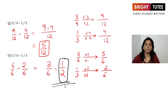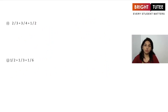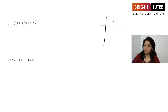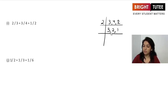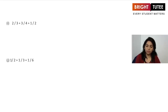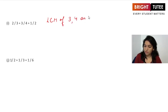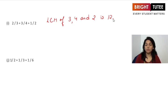Now we have a question with three terms to add. The denominators are 3, 4, and 2. Finding the LCM of 3, 4, and 2: dividing by 2 gives 2, leaving 1; then 3 times 2 is 6 and 6 times 2 is 12. So the LCM of 3, 4, and 2 is 12. We need 12 at the denominator in each case.